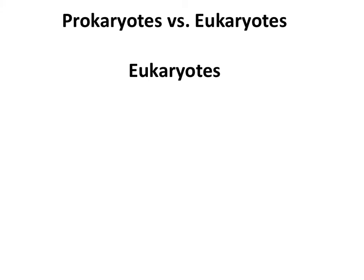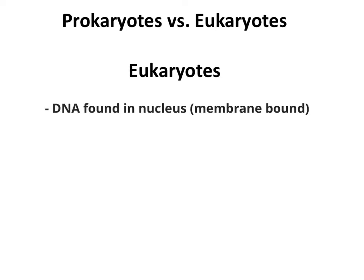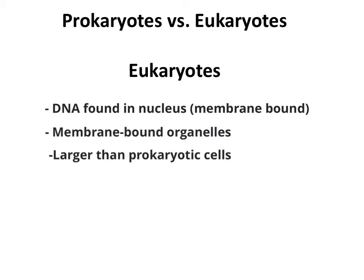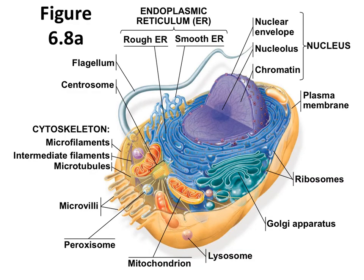Eukaryotic cells are more complex than prokaryotic cells. Their DNA is found in the nucleus, which is a bound membrane. They also have many membrane-bound organelles, which we will be talking about throughout the rest of this lecture. The cytoplasm is found in the region between the plasma membrane and the nucleus. Eukaryotic cells are larger than prokaryotic cells. Protists, fungi, animals, and plants all consist of eukaryotic cells. In this figure, you can see a nucleus where the DNA is membrane-bound, as well as several organelles, making the eukaryotic cell a much more complex cell.